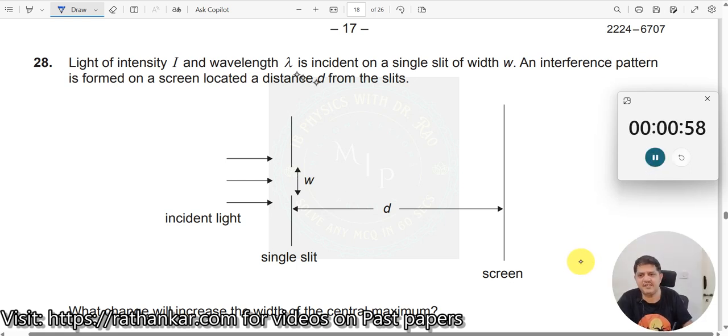Question number 28. Light of intensity i and wavelength lambda is incident on a single slit of width w. So light is coming here, falling out to here, there is only one single slit.